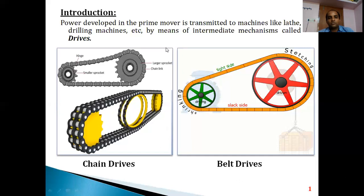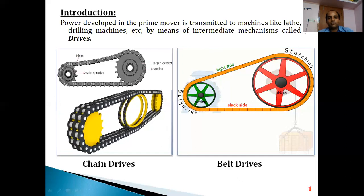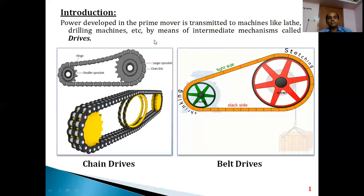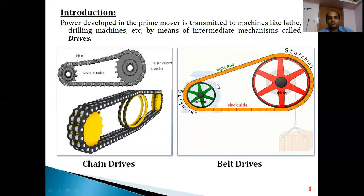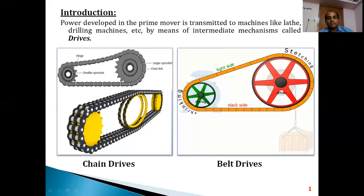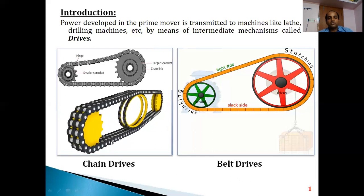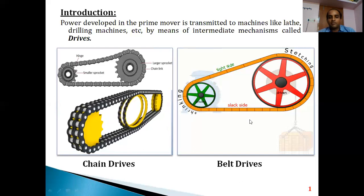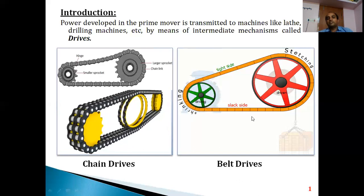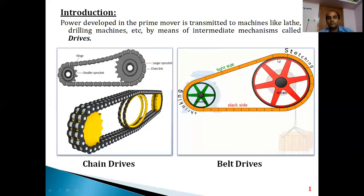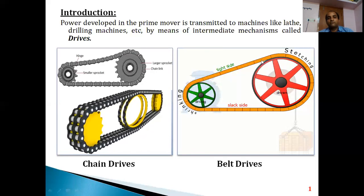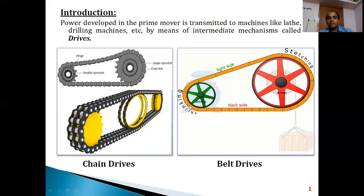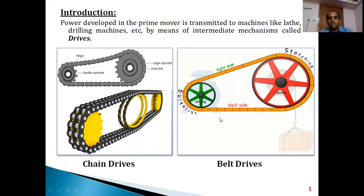The same mechanism is used for different machines. Whatever power is developed in a machine is transmitted to other machines by means of intermediate mechanisms. It may be in the form of chains — known as chain drives. For example, at sugarcane juice centers, power from the motor is transferred to the juice crusher with the help of a belt — we call this a belt drive.